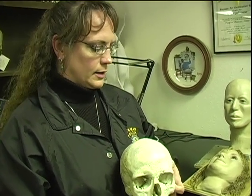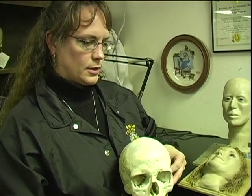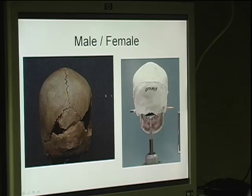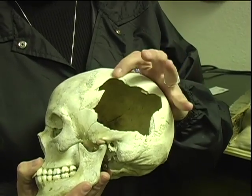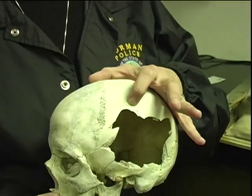I'm an investigator as well as a forensic artist, and back here I'll investigate — we can be assigned anything from petty larcenies to homicides. So if you are a witness or a victim to a crime and you saw what that person looked like, my job is to get that person out of your head and put it on a piece of paper so everybody else can see it and see if we can identify that person.